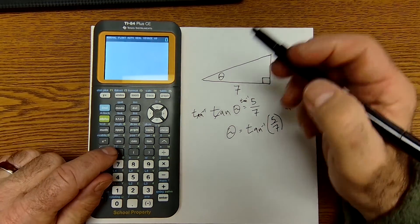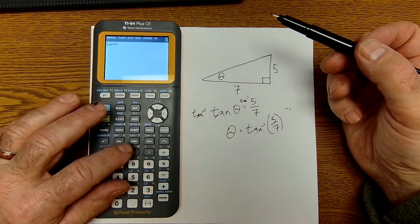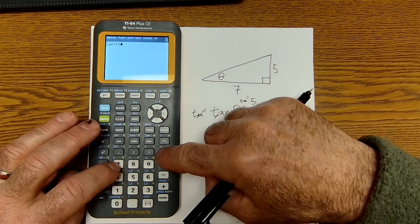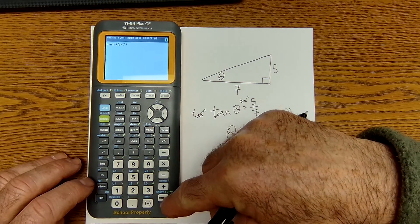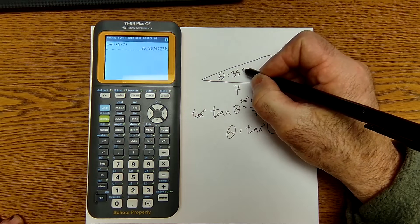So what I do right here, there's my tan button. My inverse tan is right above it. So I go second tan, 5 divided by 7, close quantity, enter, and I get 35.5 degrees.